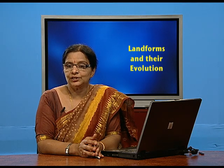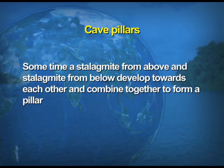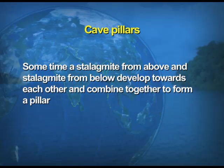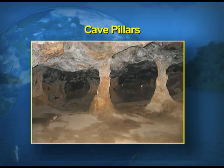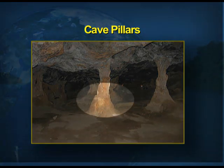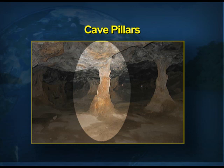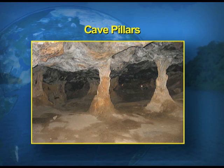The last feature formed by the depositional action of underground water is the cave pillar. Sometimes a stalactite from above and a stalagmite from below develop towards each other and combine together to form a pillar, which is known as a cave pillar. The visual shows how the stalactite from the roof side and stalagmite from the floor start expanding, and at one point in time they meet and join each other, forming the cave pillar.